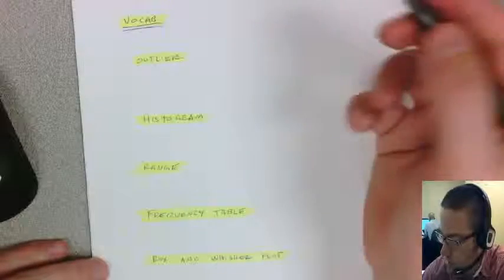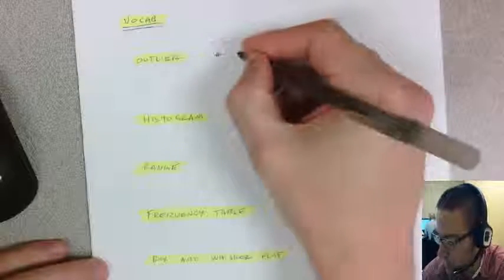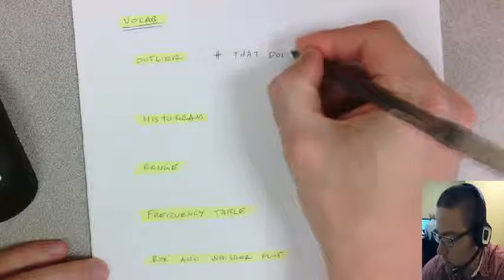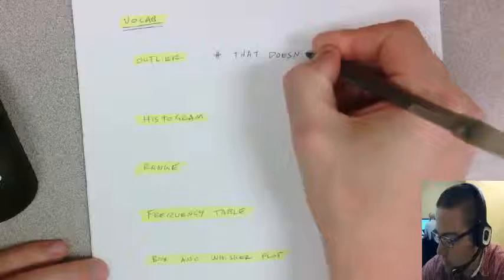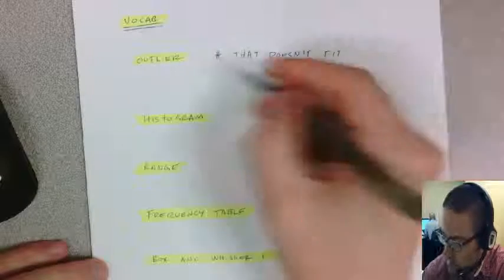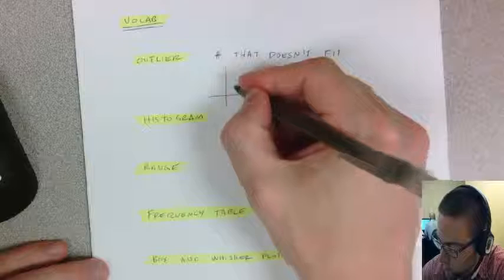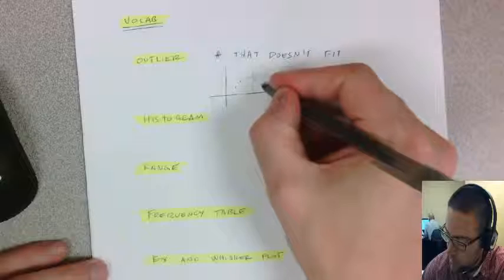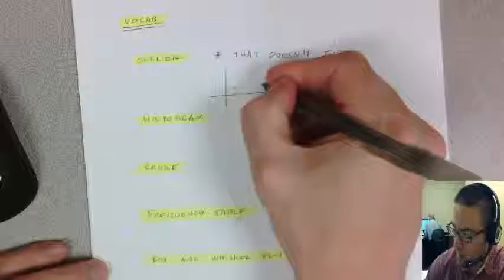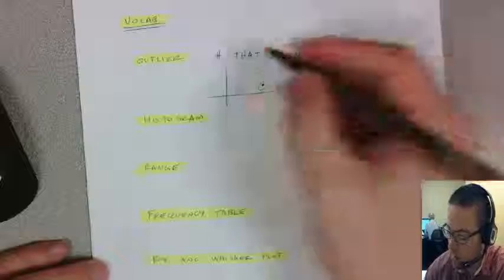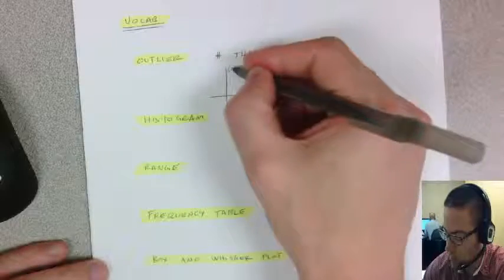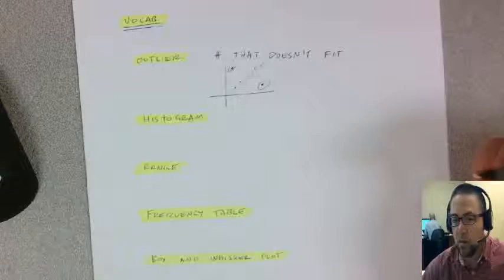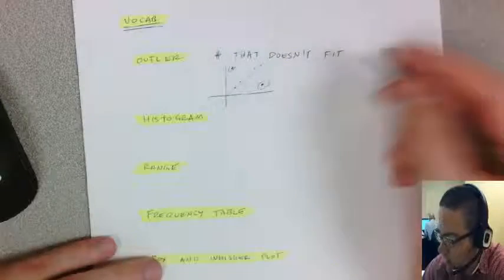The word outlier just means it's a number that doesn't fit the data. You can think about this as when we looked at our linear functions before, if you had a bunch of dots that are points that were seeming to fit along this line and then you had another point that was out here, we call that an outlier. If there's points that don't really fit the main trend, then we call that an outlier.